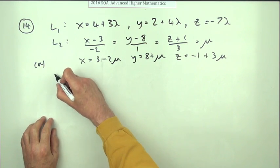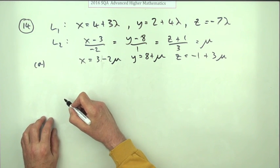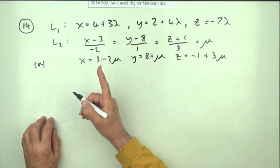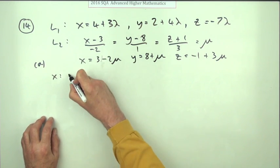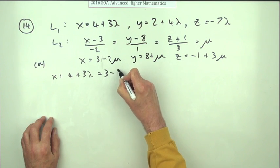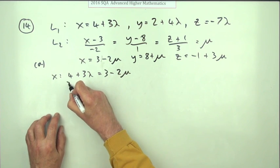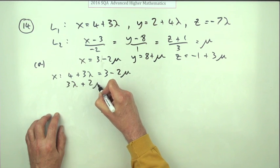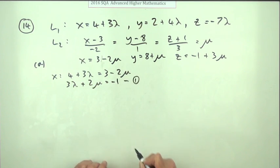Now do they intersect? Well let's just check where the xy intersection is first of all and then see for that point if the z's are the same. So x's: 4 plus 3 lambda equals 3 minus 2mu. Taking that over, 3 lambda plus 2mu should be negative 1. There's one equation.